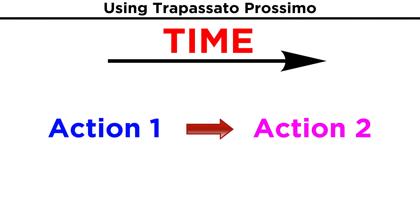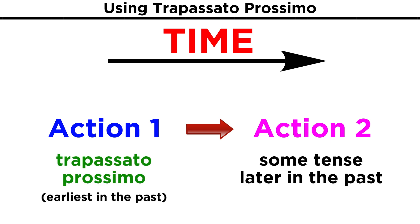Now let's create some situations where one could use the trapassato prossimo. In all of these situations, two actions in the past are described, but one of them had already happened before the other one took place. English can get away with using just one past tense for these situations, but Italian is much more precise. The action that had already happened first is the one that will require trapassato prossimo.